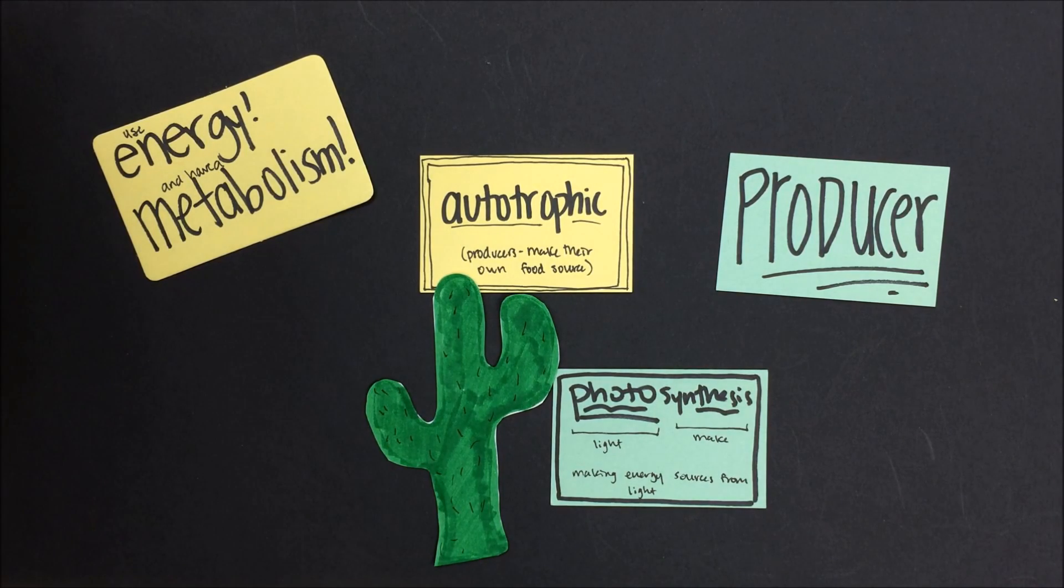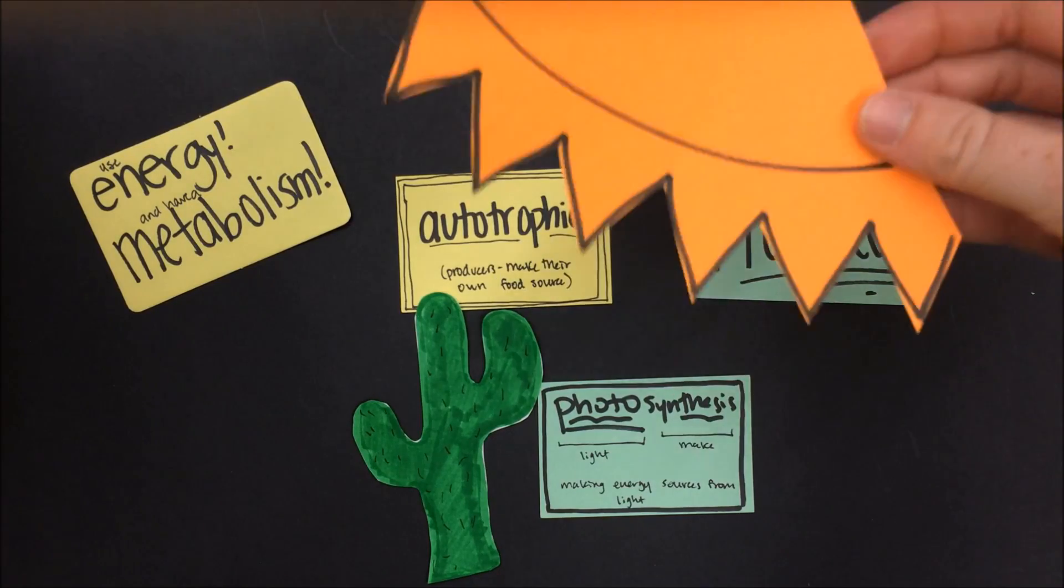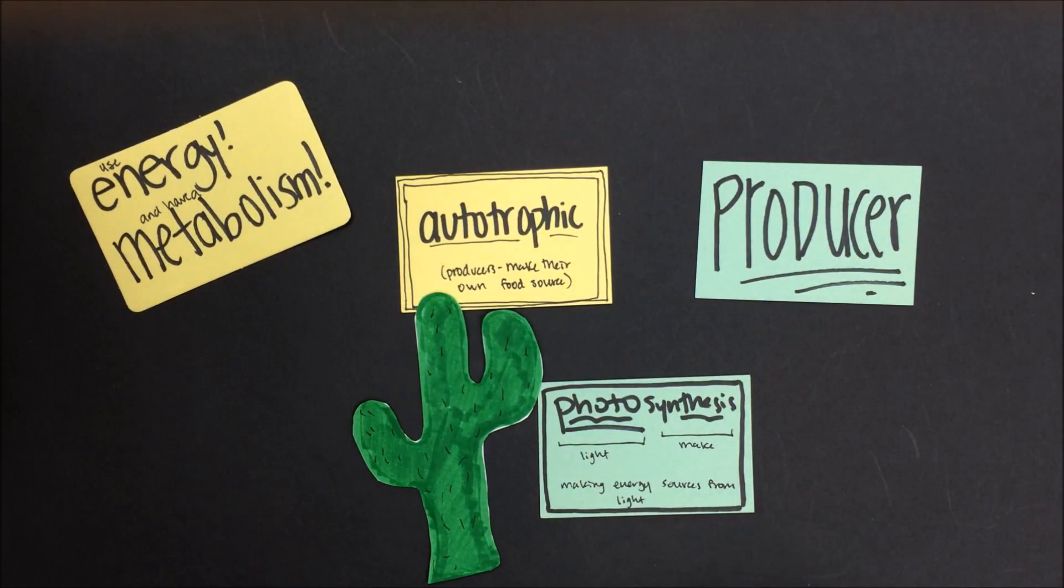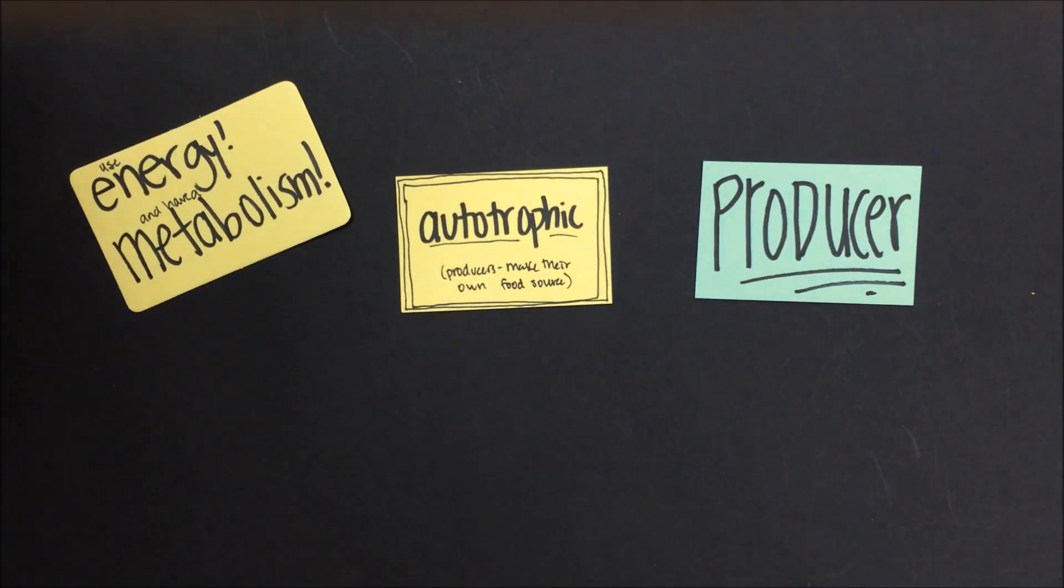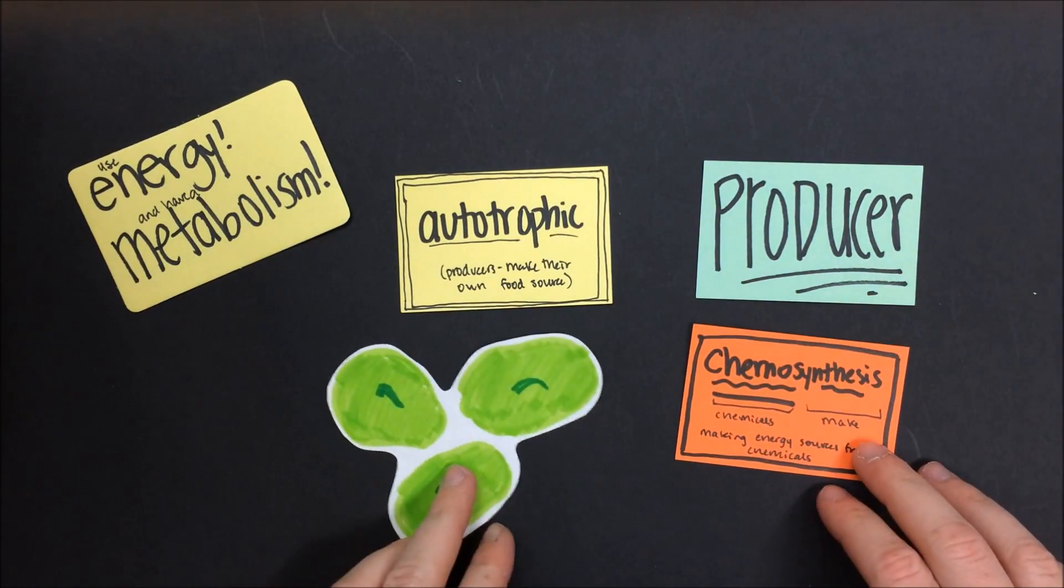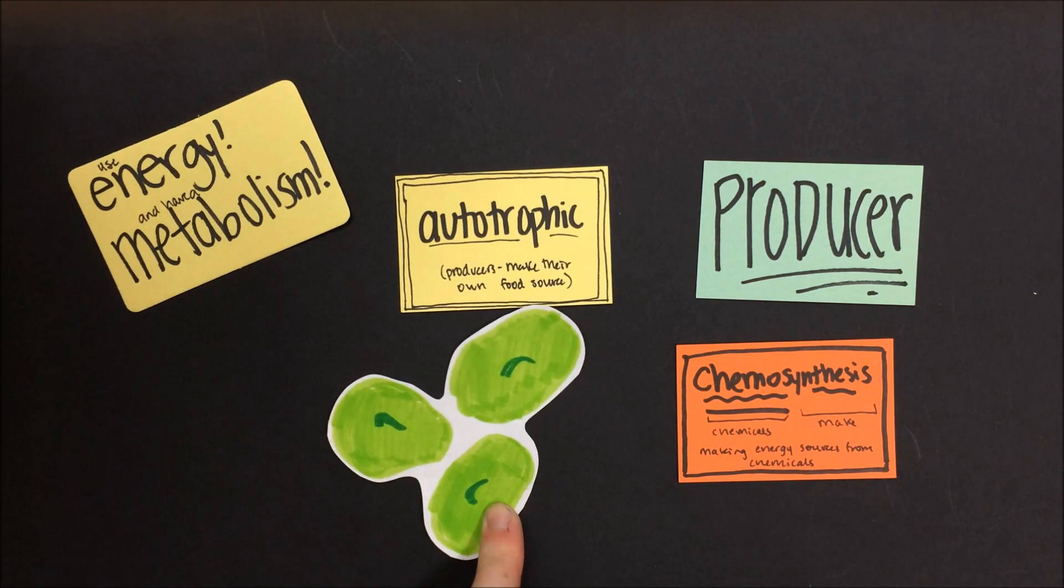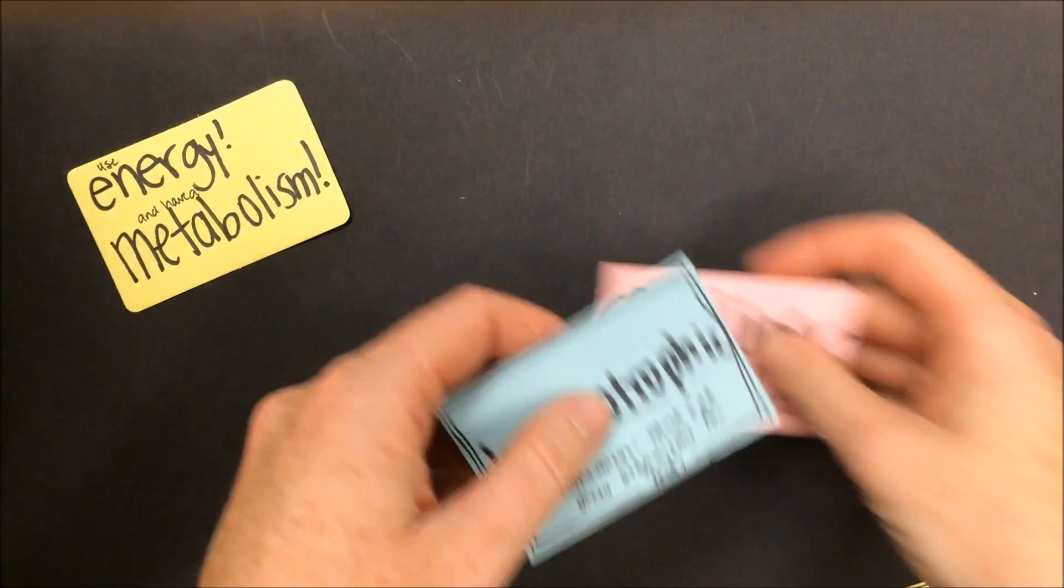Some producers, like this cactus plant, use photosynthesis to create their own food source. Energy from the sun is absorbed and converted to chemical energy that's stored in the form of glucose for later use by the plant. Another kind of autotrophic producer is an organism that can do chemosynthesis, which involves taking chemical compounds and converting them into usable energy for the organism and its metabolic processes. Some organisms like deep dwelling archaea do this process.